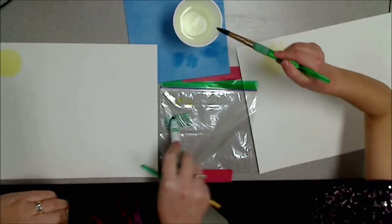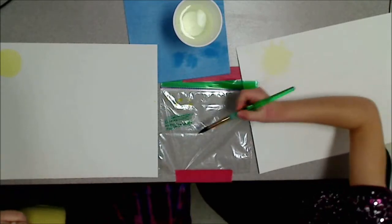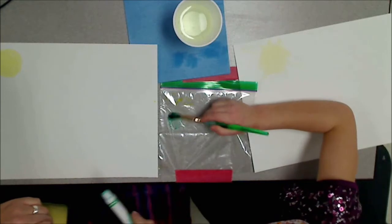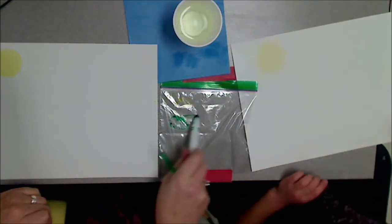All right, Rosie, you go ahead and grab all that green onto your brush. Rub it around. And start painting your grass on the bottom of your page, okay? I'm going to do it again.